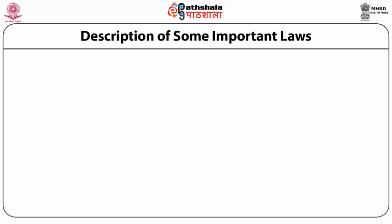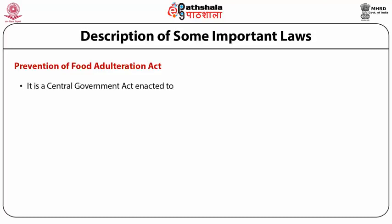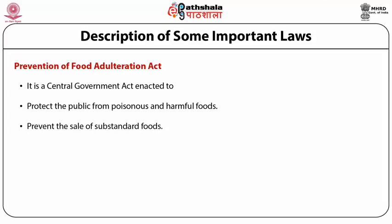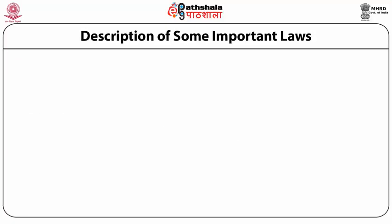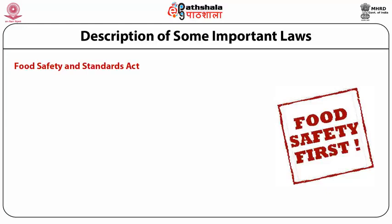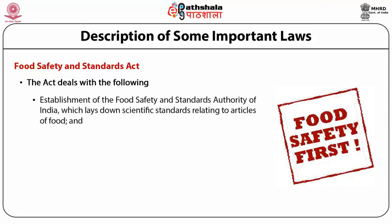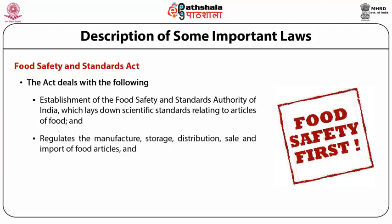Now we will describe some important laws related to tourism and hospitality industry. The first is the Prevention of Food Adulteration Act, a central government act enacted to protect the public from poisonous and harmful foods, prevent the sale of substandard foods, and protect the interests of consumers by eliminating fraudulent practices. The second law is the Food Safety and Standards Act, which deals with establishment of the Food Safety and Standards Authority of India, which lays down scientific standards relating to articles of food and regulates the manufacture, storage, distribution, sale and import of food articles, ensuring the availability of safe and wholesome food for human consumption.